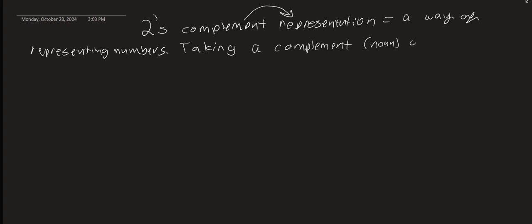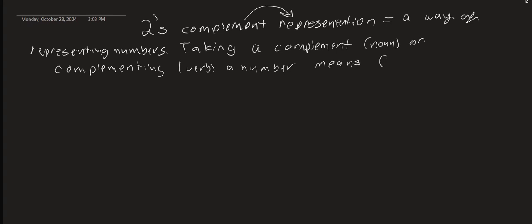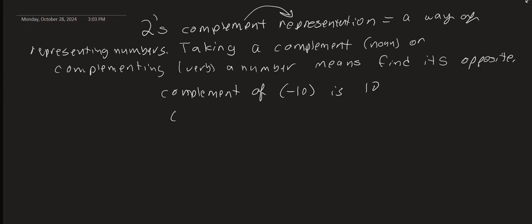Taking a complement — there 'complement' is a noun. Or complementing a number — that's a verb. It means finding its negative, or finding its opposite. So the complement of negative 10 is 10, and the complement of 4 is negative 4. That's in decimal — numbers you understand. So it means finding the opposite. Once we understand how to express numbers in two's complement, taking the complement just means finding the negative.